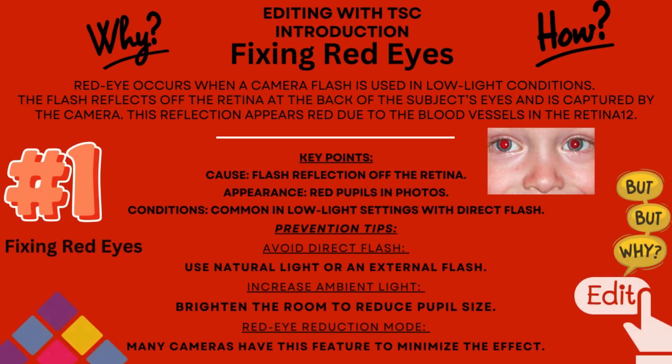Okay, let's just go over the key points. Cause: flash reflection off the retina. Appearance: red pupils in photos. Conditions: common in low light settings with direct flash.